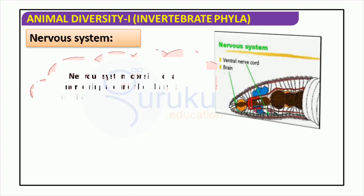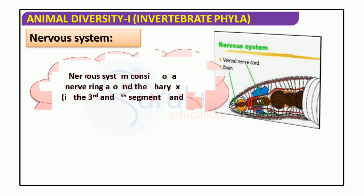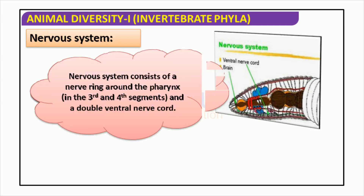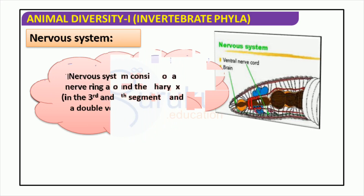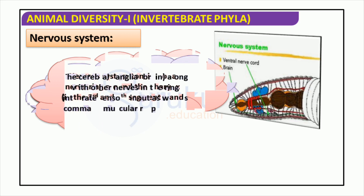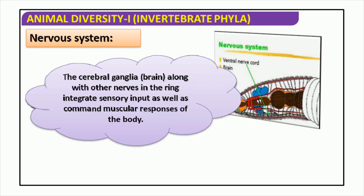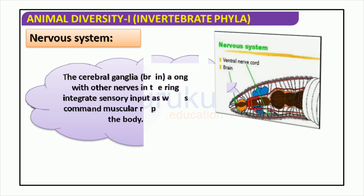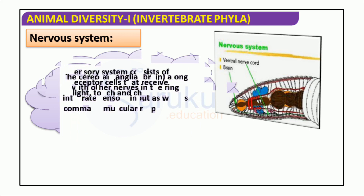The nervous system serves as the command center of our bodies, enabling us to acquire, analyze, and react to stimulation. In many invertebrates like those studied in this unit, the nervous system consists of a nerve ring around the pharynx and a double ventral nerve cord, together with sensory organs situated in the front of the body which receive light, contact, and chemical stimulation. This complex arrangement of neurons allows these creatures to interpret their surroundings and take the necessary action.